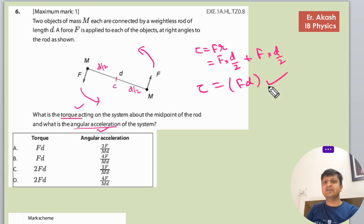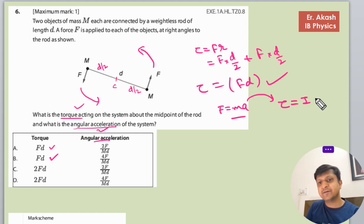We have calculated, so we have two options: Fd. So now we have to calculate the angular acceleration. Just remember, in translational motion there is a formula F equals ma. So in rotational motion we use torque equals I alpha, where alpha is the angular acceleration.